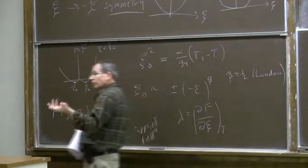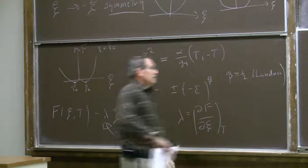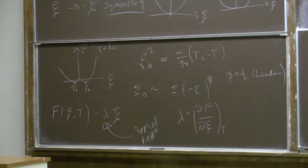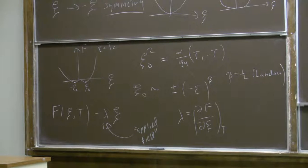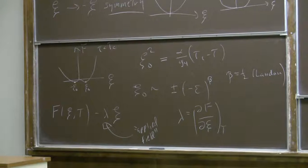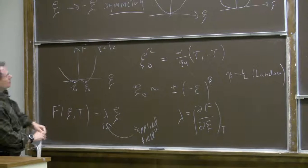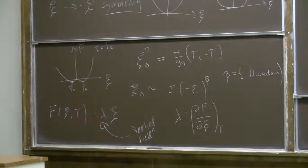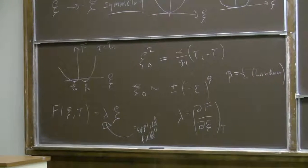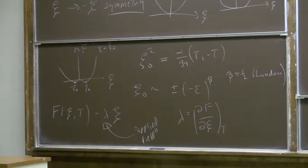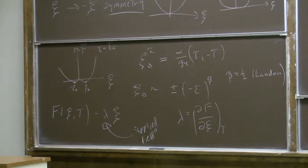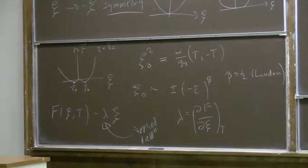When approaching the critical point from the high temperature phase, the most probable configuration has psi equal to zero, and the inverse susceptibility goes to zero at the critical temperature like alpha times tau minus tau_c. In the low temperature phase, we replace psi by psi zero squared. So the inverse susceptibility is zero for tau greater than tau_c, and goes like alpha over g4 times tau_c minus tau when tau is less than tau_c — the same form but with opposite sign and a coefficient of 3.